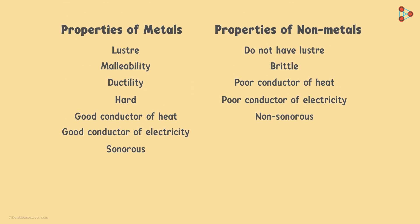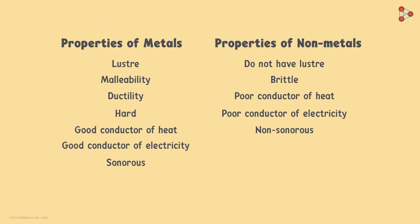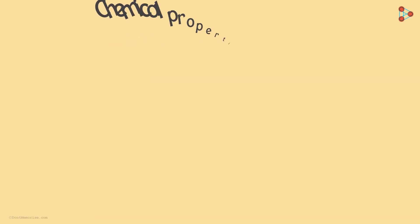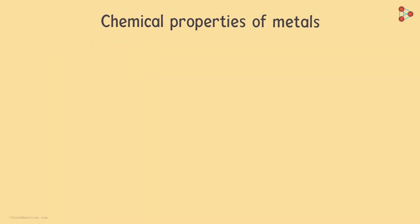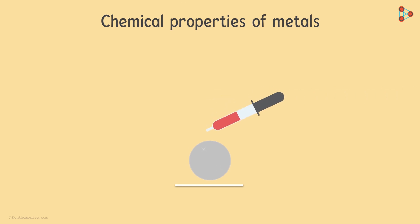We saw that elements cannot be clearly classified into metals and non-metals based on their physical properties. Will chemical properties help? Let's understand chemical properties of metals first.